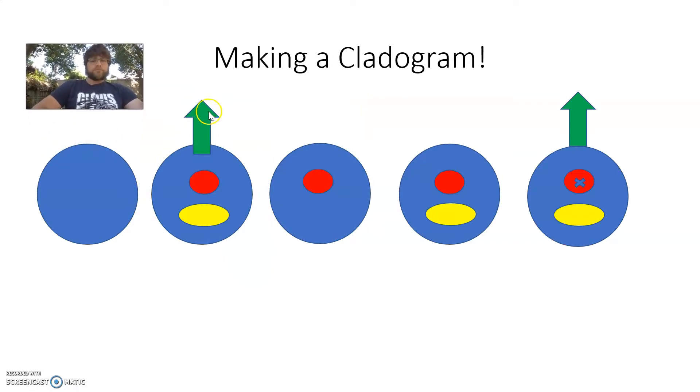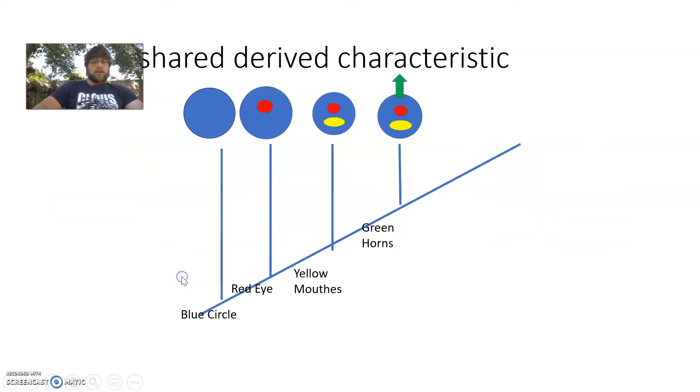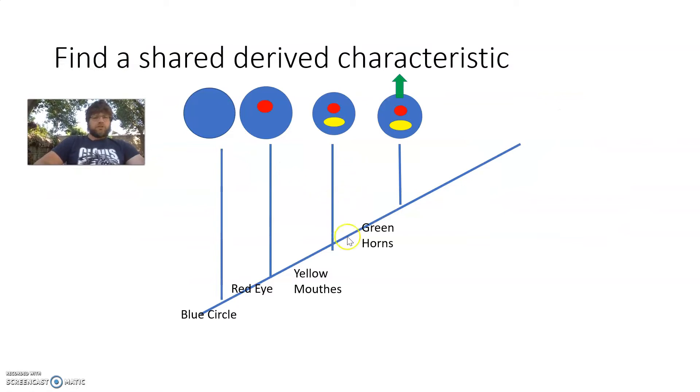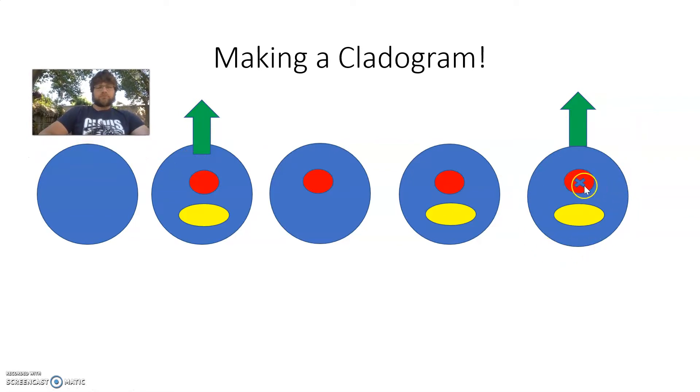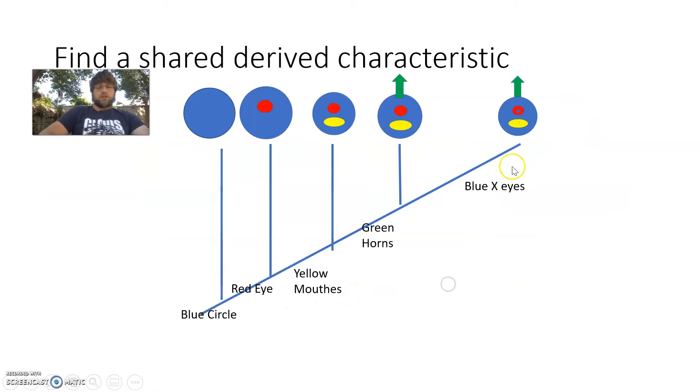Let's go back. I have two species left. And I look at them. So green horns, that's the next shared-derived characteristic. So on my cladogram, I'm going to write in green horn on my baseline, as my shared-derived characteristic. And then show a population diverging, leading to the modern-day species. And to wrap it up, I have this one with the red cross. Or the blue cross, I mean, in its eye. So blue cross eye as the last shared-derived characteristic.